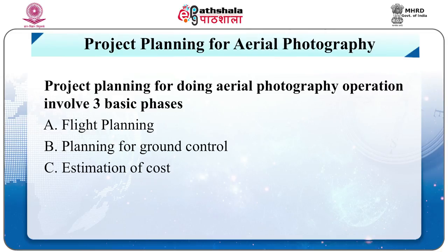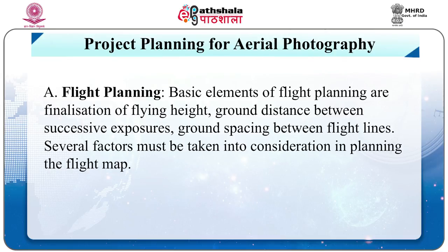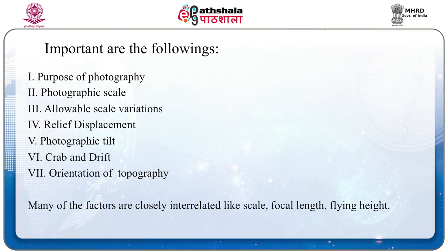Project planning for aerial photography involves three basic phases: 1. Flight planning. 2. Planning for ground control. 3. Estimation of costs. Basic elements of flight planning are: finalization of flying height, ground distance between successive exposures, and ground spacing between flight lines. Several factors must be taken into consideration in planning the flight map, including: purpose of photography, photographic scale, allowable scale variations, relief displacement, photographic tilt, crab and drift, flying height, and orientation of topography. Many of these factors are closely interrelated, such as scale, focal length, and flying height.